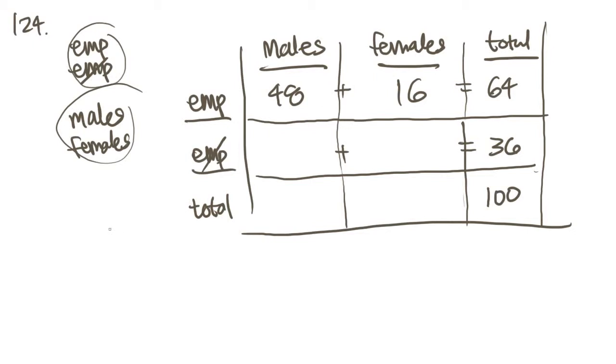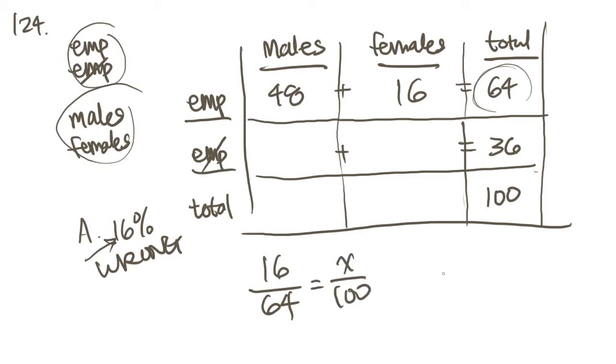Here's where it gets tricky. You'll see answer choice A says 16%, but if you picked this answer you would be wrong. You have to read the question carefully. It says what percent of the employed people in town X are females, not what percent of the entire town. So let's set up a ratio. 16 over 64 is the same as what over 100. Do the multiplication and you'll get 1600 equals 64x. If you solve for this, the answer is actually going to be 25. That is answer choice B.